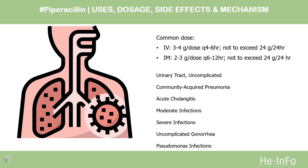Severe infections: 3–4 g IV or IM every 4–6 hours, not to exceed 24 g/24 hours. Uncomplicated gonorrhea: 2 g once with 1 g probenecid 30 minutes before injection. Pseudomonas infections: 4 g IV or IM every 4 hours.